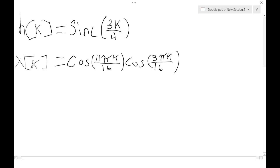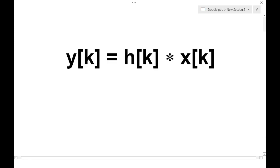Hello! Today we'll be solving for the output of this system, given this x of k and this h of k. So we know from our studies that y of k is equal to h of k convolved with x of k. But we don't like convolution, so let's use a shortcut.